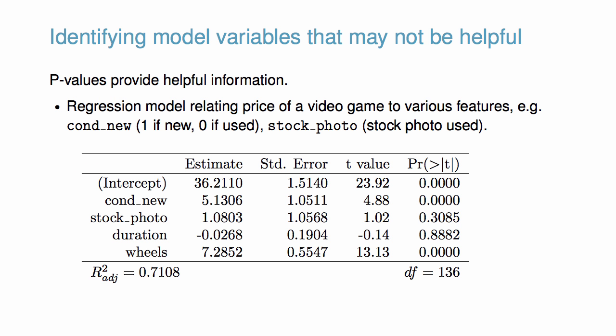Here is the output for a regression model relating price of a video game to various features, such as cond_new, an indicator variable for whether the game is new, and stock_photo, an indicator variable for whether a stock photo was used in the auction.